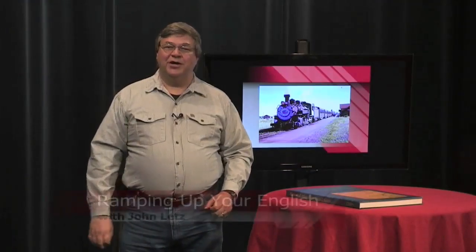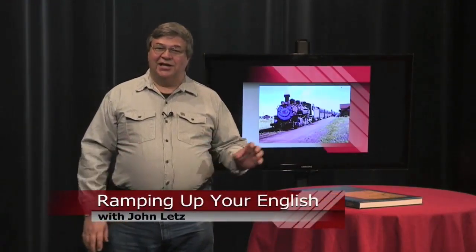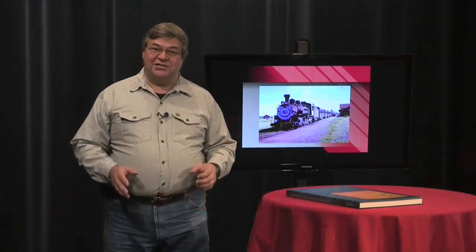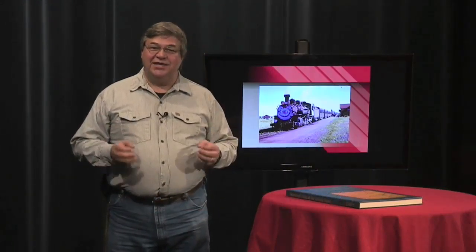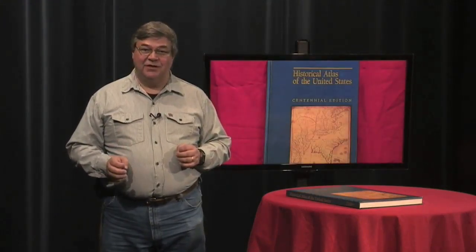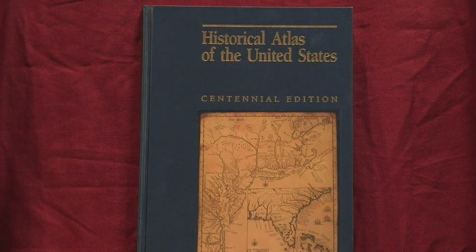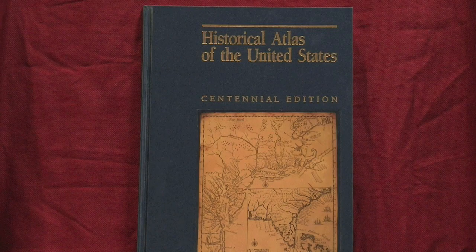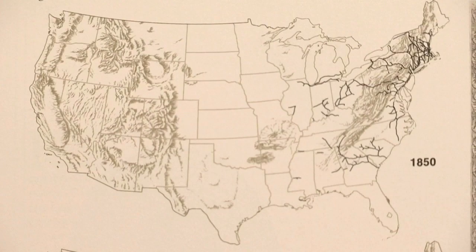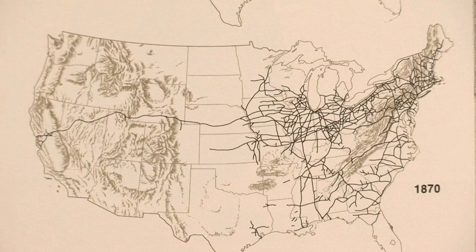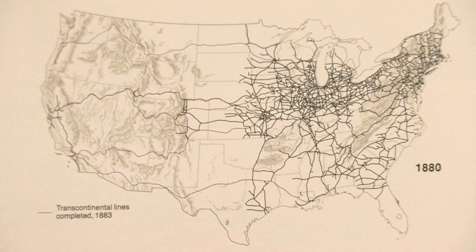This is a Ramping Up Your English book review. An atlas is a collection of maps. A historic atlas is a collection of maps, photos and illustrations that tells the reader about what happened in the past and where things happened. For the reader learning about the history of railroads, I recommend National Geographic's Historical Atlas of the United States. Many aspects of American history are beautifully illustrated here, organized around themes like immigration and industrialization. Railroad history is included here.